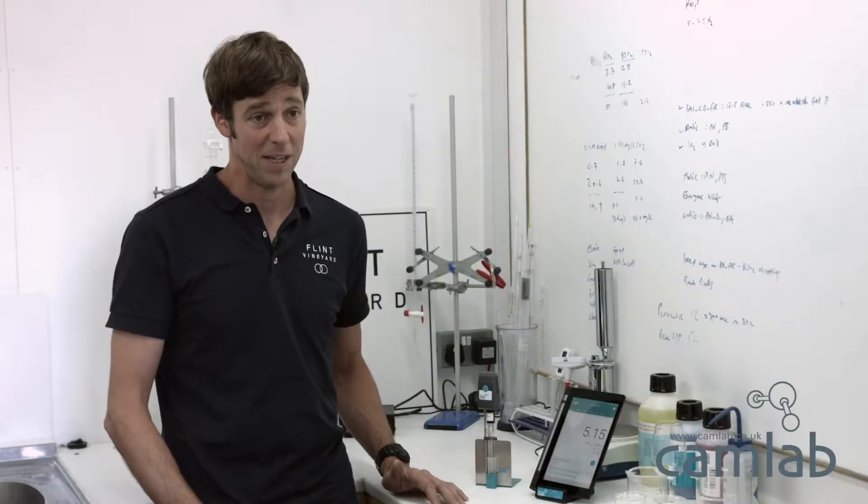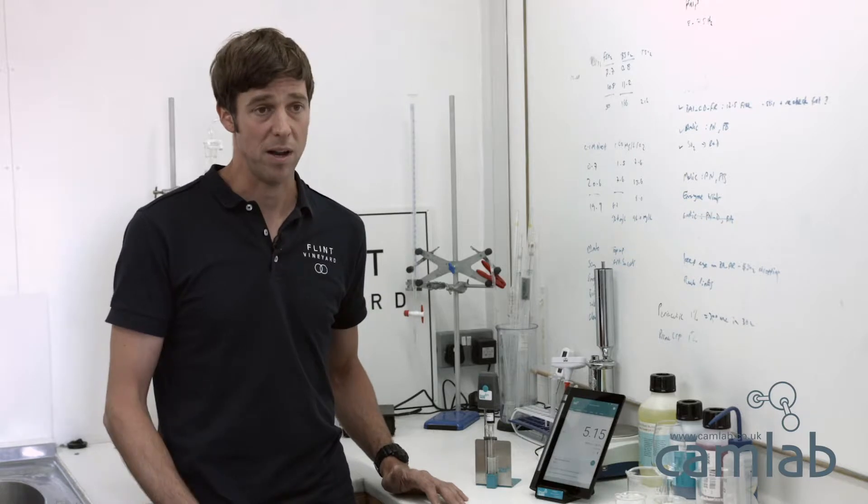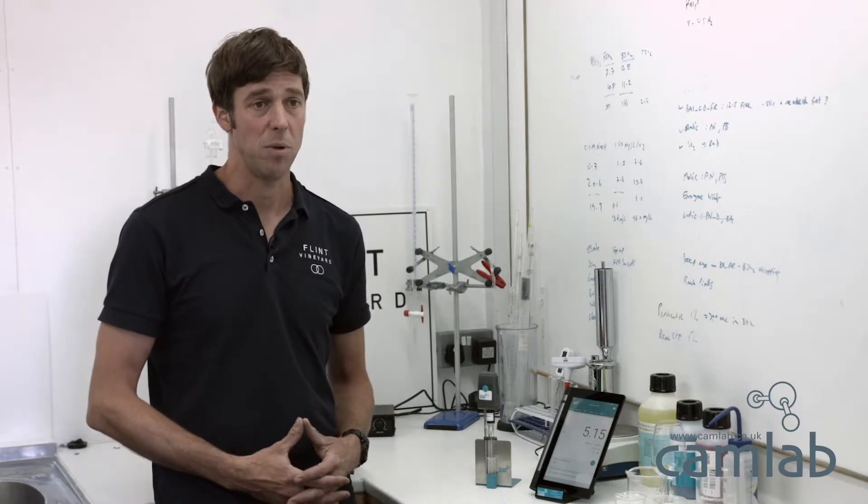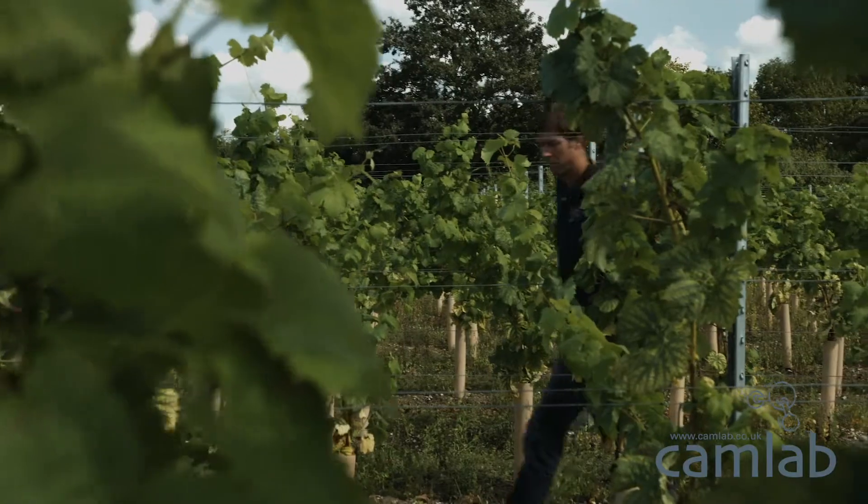pH is very important in wine making from the very start of the process. The first thing we do when analyzing pH is when we're looking at ripeness monitoring. The three parameters we look at are pH, titratable acidity, and sugars.